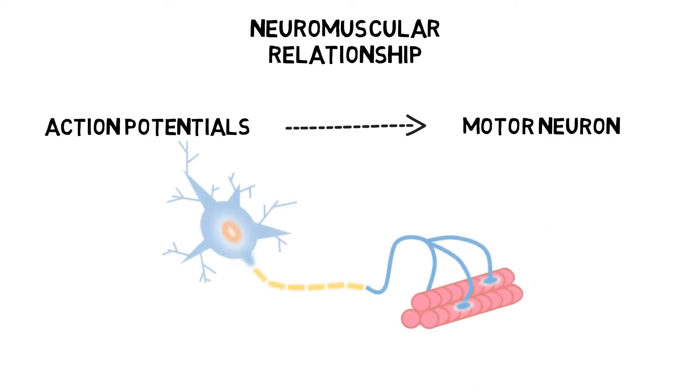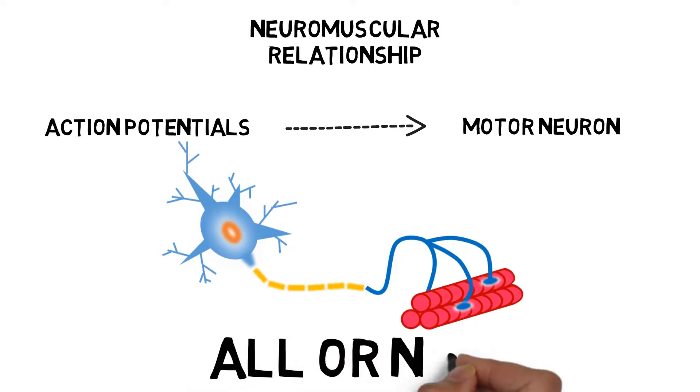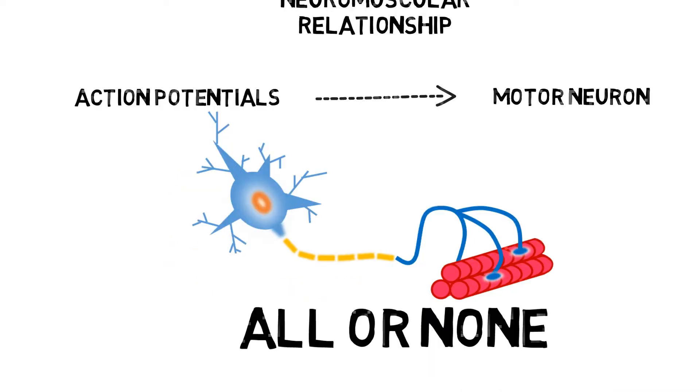A single motor neuron and the block of muscle fibers which it controls is called a motor unit. When the motor neuron is stimulated, all of the connecting fibers are immediately activated. This is known as the all-or-none law.